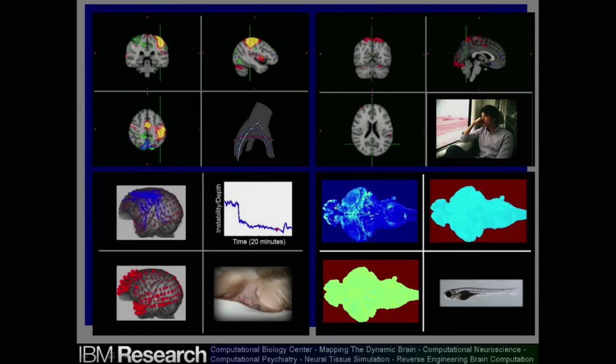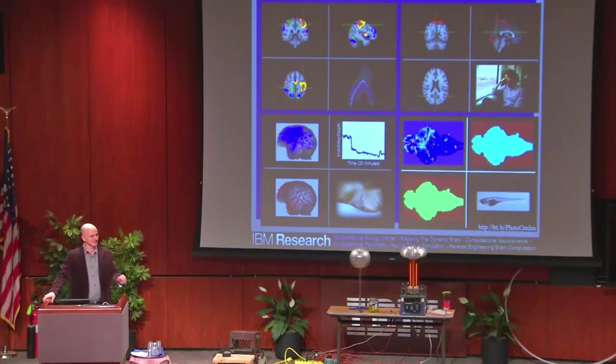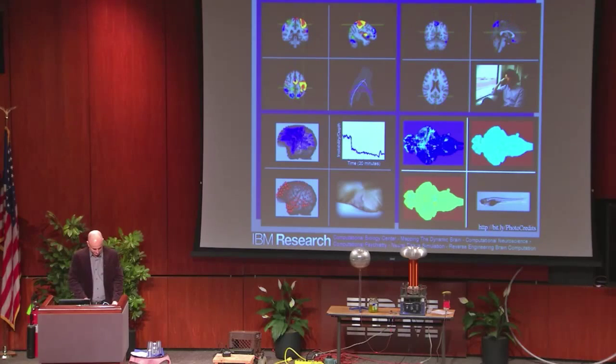Now, these data are also publicly available and came from a group at Howard Hughes' Janelia Farm Research Campus in Virginia. And the same team has these amazing plans to immerse the animal in a virtual reality environment where it can swim around, solve problems, avoid predators, all the while as they continue to image the activity of every single neuron in its brain.